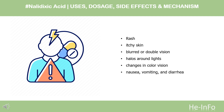Side effects: Hives, rash, intense itching, or fainting soon after a dose may be a sign of anaphylaxis. Common adverse effects include rash, itchy skin, blurred or double vision, halos around lights, changes in color vision, nausea, vomiting, and diarrhea. Nalidixic acid may also cause convulsions and hyperglycemia, photosensitivity reactions, and sometimes hemolytic anemia, thrombocytopenia, or leukopenia.